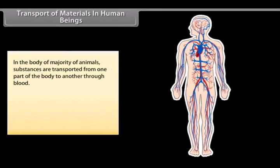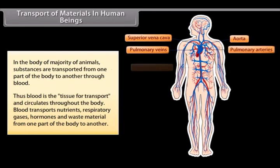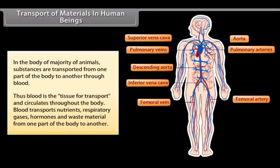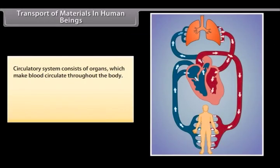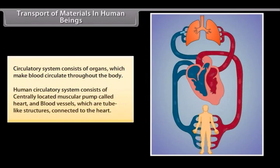Transport of materials in human beings. In the body of majority of animals, substances are transported from one part of the body to another through blood. Thus blood is the tissue of transport and circulates throughout the body. Blood transports nutrients, respiratory gases, hormones and waste material from one part of the body to another. Circulatory system consists of organs which make blood circulate throughout the body. Human circulatory system consists of centrally located muscular pump called heart and blood vessels which are tube-like structures connected to the heart.